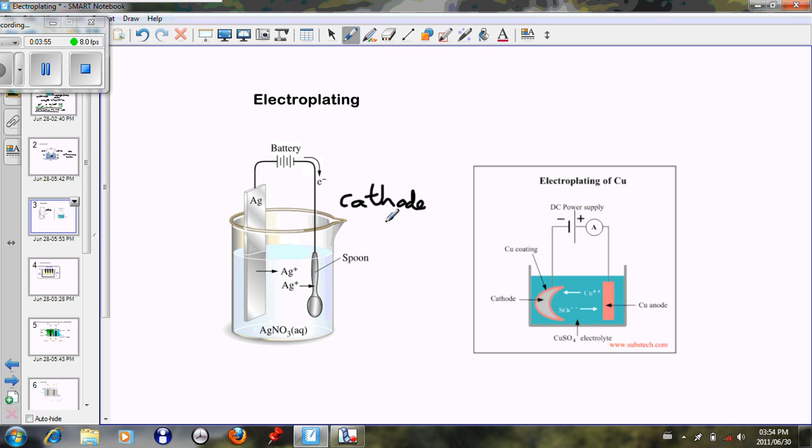In this case, what we see here is the description: Ag⁺ is attracted towards the spoon. So we can say that at the cathode the Ag⁺ will accept an electron from the battery and Ag solid will form on the cathode, and in this case it's the spoon. The spoon will become silver coated.